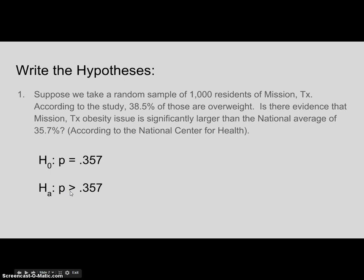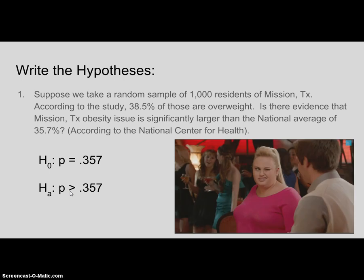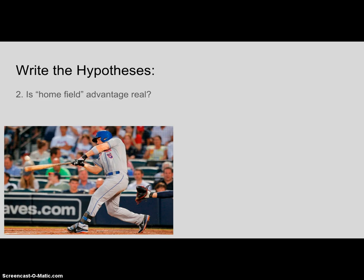Let's try another example: is home field advantage real? If it weren't real at all, we would see a 50-50 chance that any team could win. So our null hypothesis would be P equals 0.5. The alternative would be P greater than 0.5, because having a home field advantage means you would win more than 50% of the time.